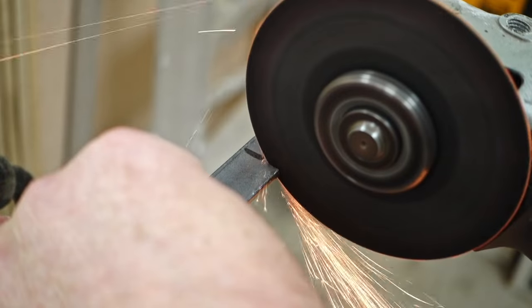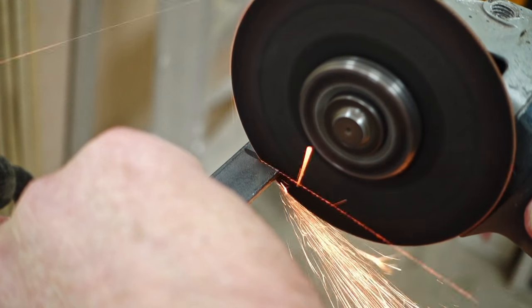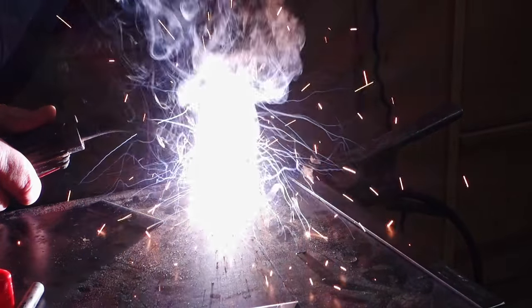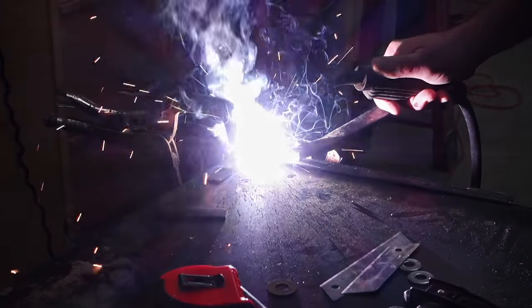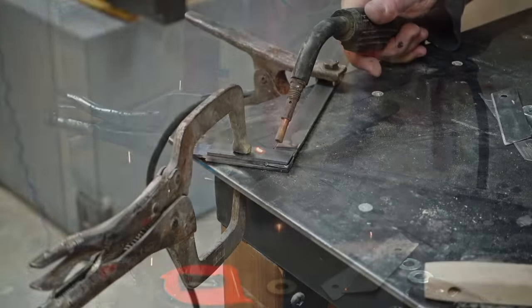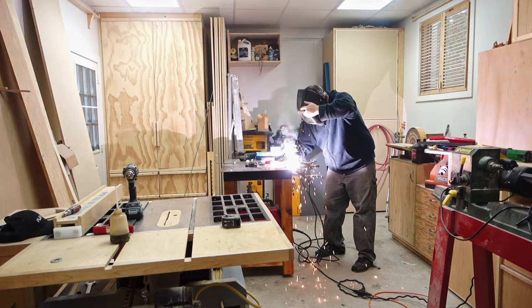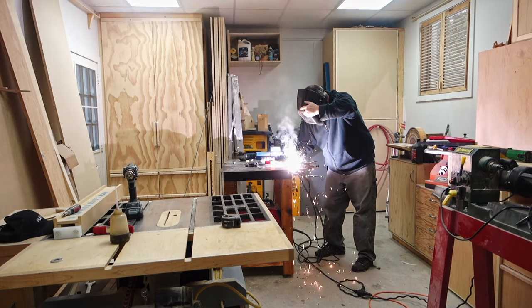Now my welding here is not great. I'm using flux core wire to do the welding with. I don't have welding gas for my machine, so there is going to be a lot of spatter. But spatter only affects how it looks. It really doesn't affect how strong it is. Flux core wire actually makes a stronger weld than a gas shielded MIG wire will. And plus, you don't have to mess around with gas.